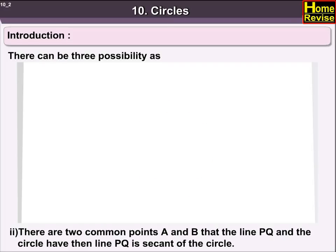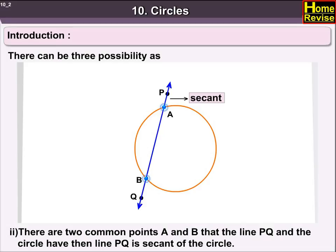Two: There are two common points A and B that the line PQ and the circle have. Then line PQ is secant of the circle.